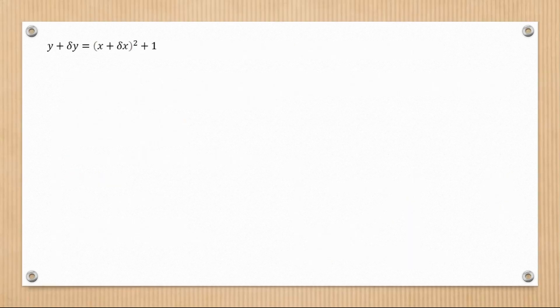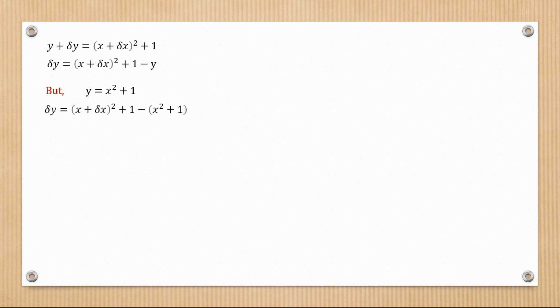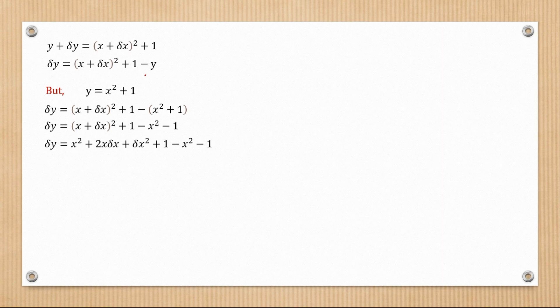We have y plus Δy equal to (x plus Δx) squared plus 1. Taking y to the other side and substituting y equals x squared plus 1, we subtract it from the right-hand side. Opening the brackets gives negative x squared minus 1. Squaring the brackets gives x squared plus 2x·Δx plus Δx squared. The x squared values and the ones cancel, leaving us with 2x·Δx plus Δx squared.